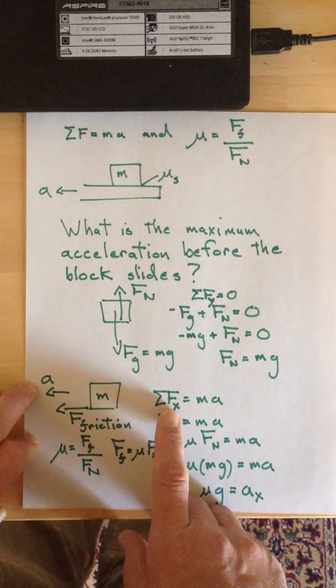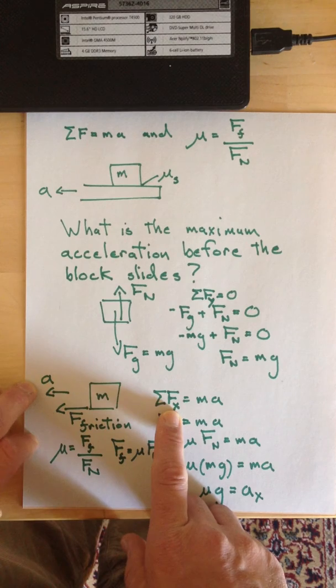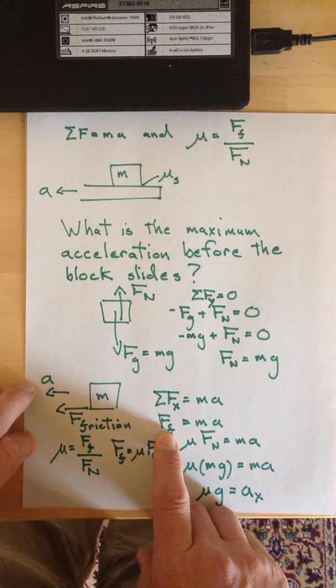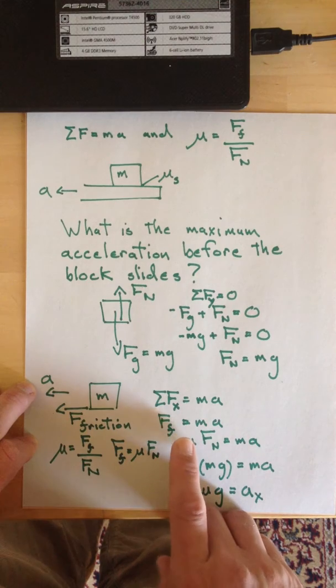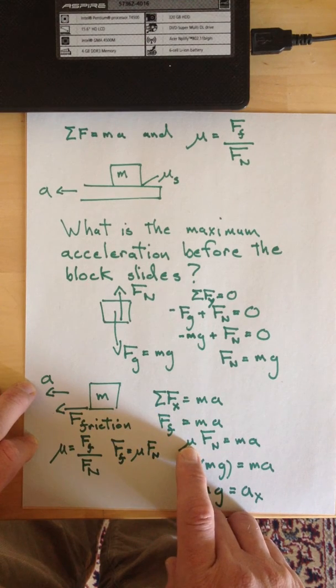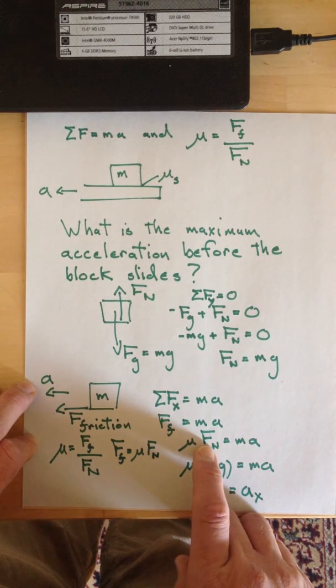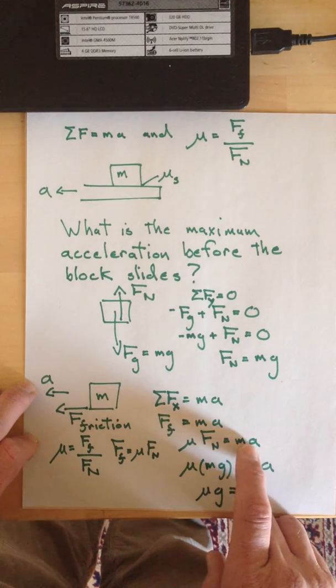Why is that important? Well, now we're going to do F equals ma in the horizontal direction. So the friction force is the only horizontal force. So we expand that to be the coefficient of friction multiplied by the normal force equals the mass multiplied by the horizontal acceleration.